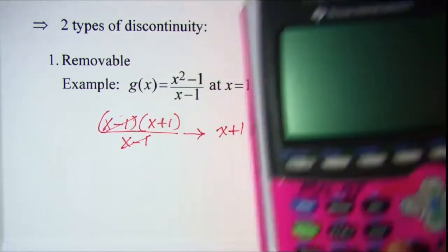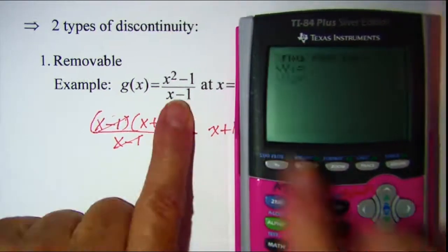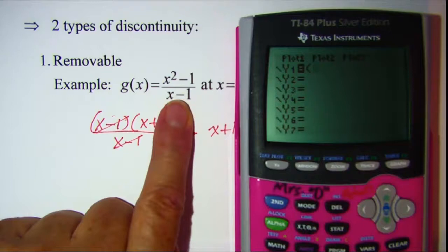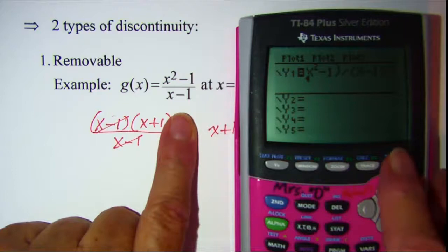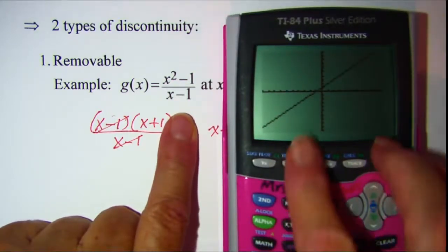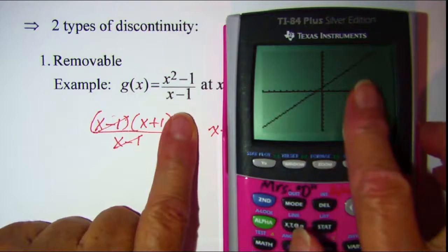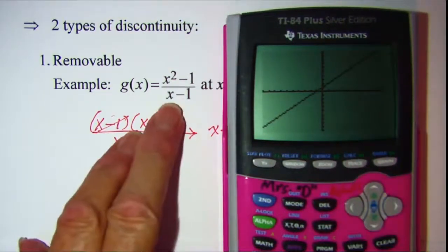Now if we were to look at this function on the graphing calculator, in the standard window it's not apparent that there's a hole in the graph.